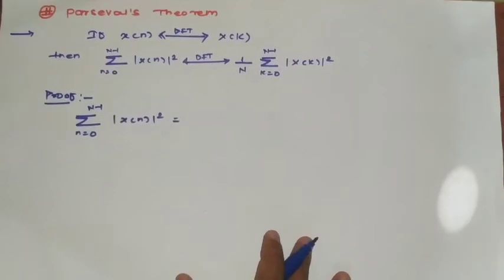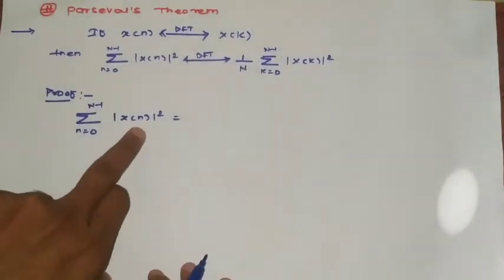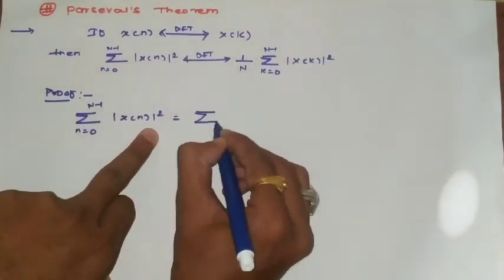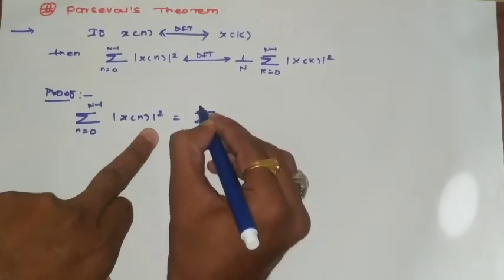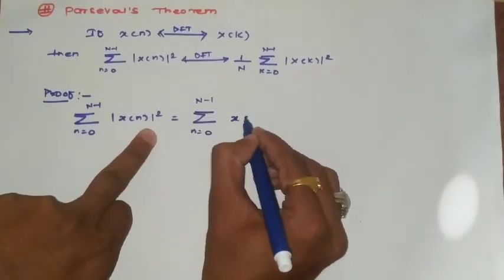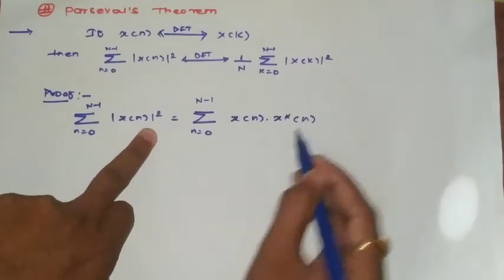We'll keep this term as |x(n)|². Now we can simplify this. Since mod square is given, I can split this term into two product terms. We can rewrite this as the summation from 0 to N-1 of x(n) multiplied by x*(n), where x* denotes the complex conjugate.